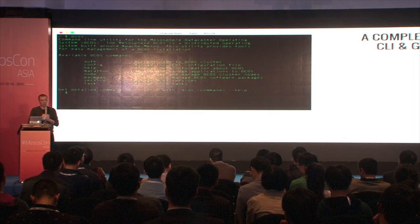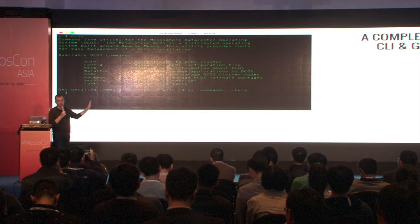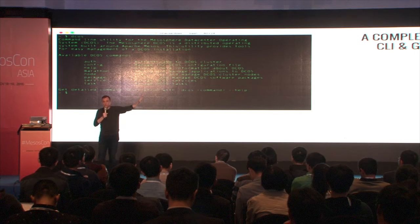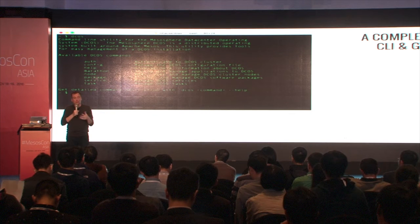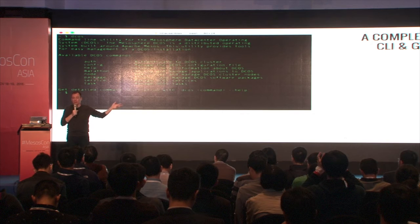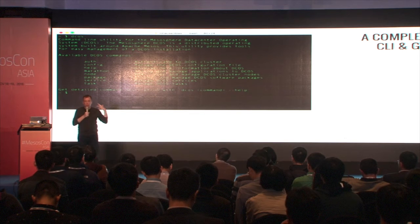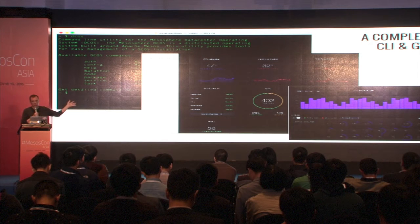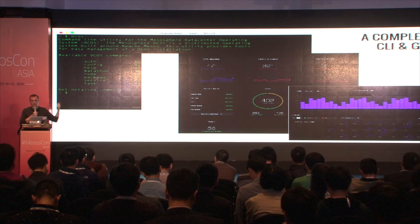Just a couple of screenshots — I wish I could do a demo. We have a complete CLI for managing the data center. One cool thing I like about this CLI is that it's extensible: as you install new packages, you get new commands. When I install Kafka, I can run DCOS Kafka commands. When I install Spark, I can do DCOS Spark commands. The CLI itself grows as you grow your data center with new packages and frameworks.